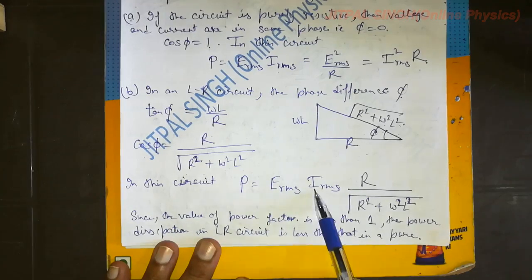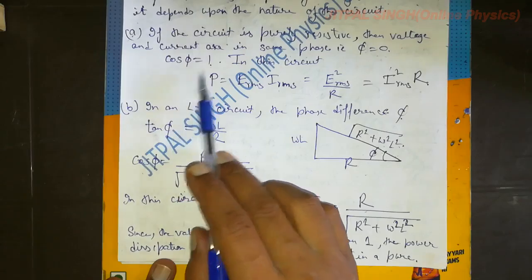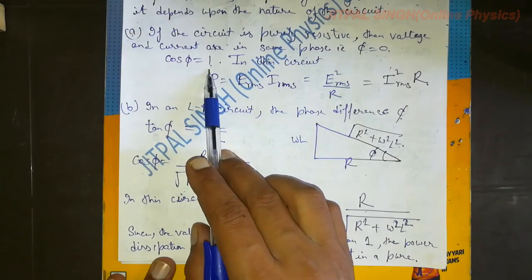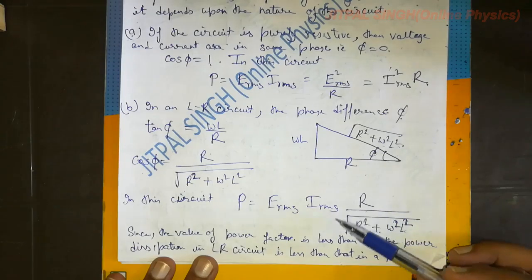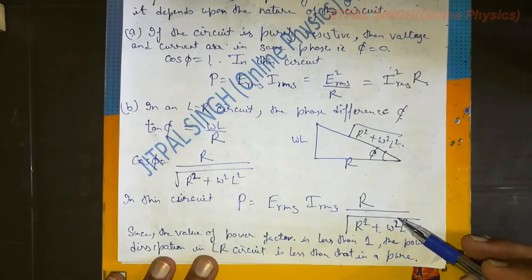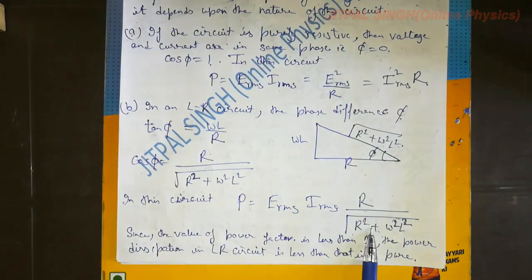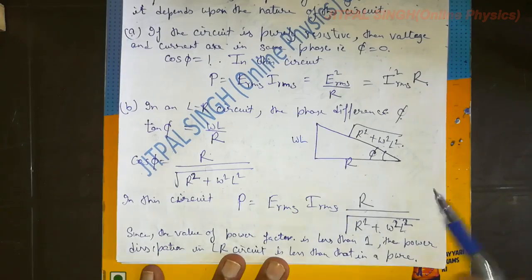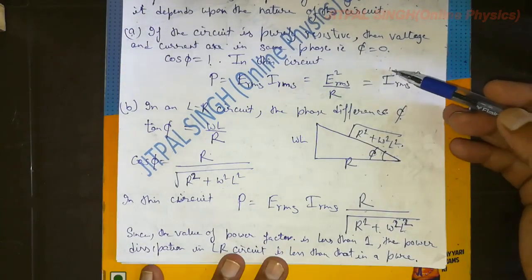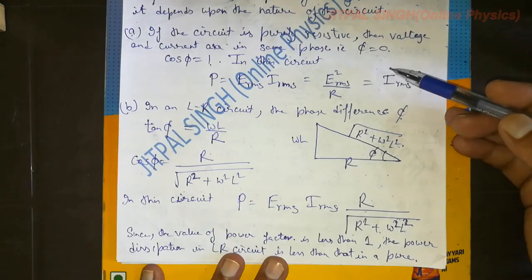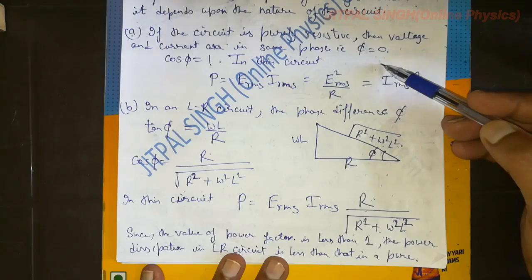In the LR circuit, P = E_rms · I_rms · R/√(R² + ω²L²). Comparing the two circuits: for a pure resistor, cos φ = 1 (maximum power factor), while for the LR circuit, cos φ = R/√(R² + ω²L²), which is less than 1 since the numerator is smaller than the denominator. Therefore, power loss in an LR circuit is less than in a purely resistive circuit. That is why, to reduce alternating current, we prefer an LR circuit instead of a pure resistor circuit.